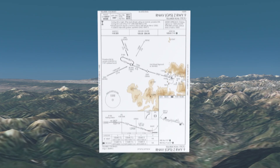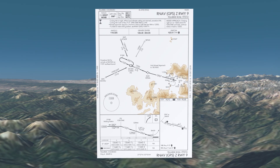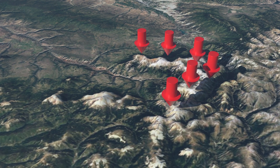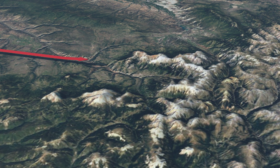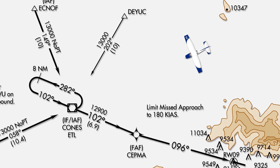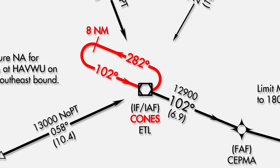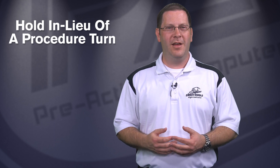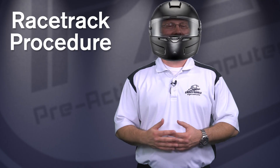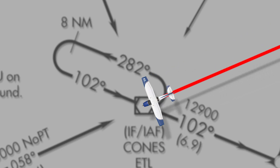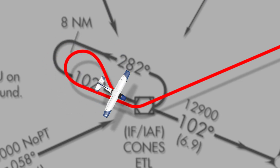Flying an approach without vertical guidance offers a challenge not present in an LPV approach — it is up to the pilot to determine the necessary rate of descent to maintain the depicted glide path. Let's take a look at the RNAV GPS Zulu 9 LP approach into Telluride, Colorado. With mountain peaks above 14,000 feet east of the field, it's easily one of the trickiest airports to fly into. Approaching Telluride from the northeast and tracking direct to one of the initial approach fixes, Cones, the Cones fix contains a hold. As the hold is part of the approach procedure, it's known as a hold in lieu of a procedure turn, now called a racetrack procedure, which serves the same purpose as a procedure turn. The holding pattern is a maneuver completed when the aircraft is established on the inbound course after executing the appropriate entry.